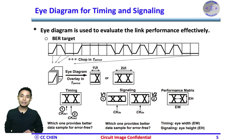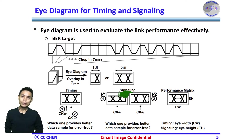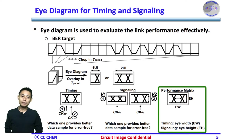For example, you can identify whether CK data sample 1 or CK data sample 2 has a better timing margin to get the right decision over a low BER. Also, you can identify whether sample voltage VS1 or VS2 has a better voltage margin for a low BER target. Overall, the performance metric can be summarized easily by the eye width and eye height.